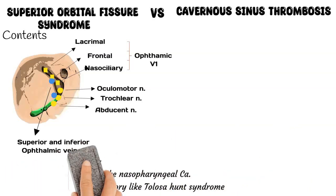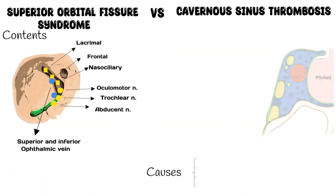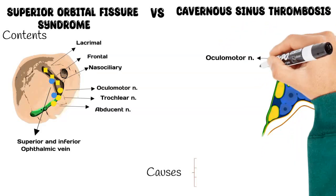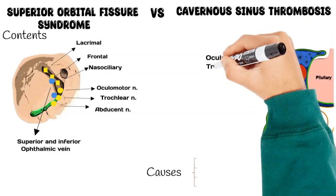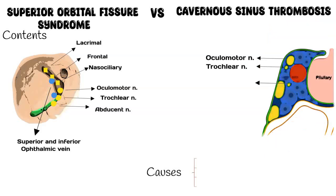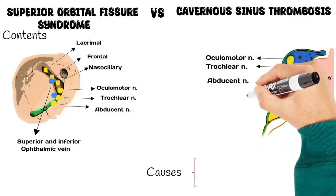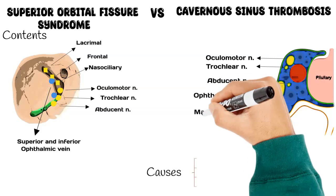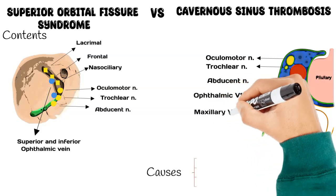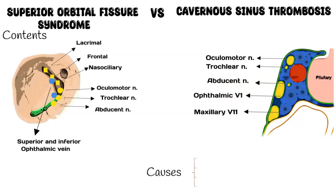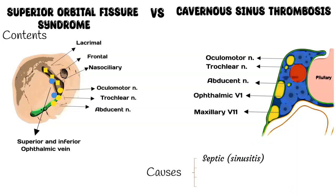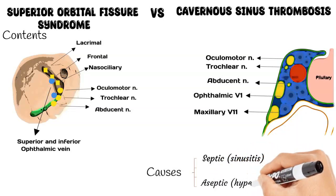Now let's talk about the structures passing through the cavernous sinus. We have the oculomotor nerve, the trochlear, and the abducent nerves, in addition to the ophthalmic and maxillary divisions of the trigeminal nerve. Cavernous sinus thrombosis can be septic in etiology, as a complication of sinusitis, or aseptic, as in a hypercoagulable state.